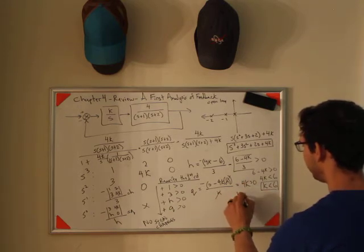So H now needs to be greater than zero. So that means that 6 minus 4K needs to be greater than zero, which means 4K needs to be less than 6, which means K needs to be less than 6 over 4. Q needs to be greater than zero, which means 4K needs to be greater than zero, so K needs to be greater than zero. If you notice, there are bounds on K now, and this is the range for stability.